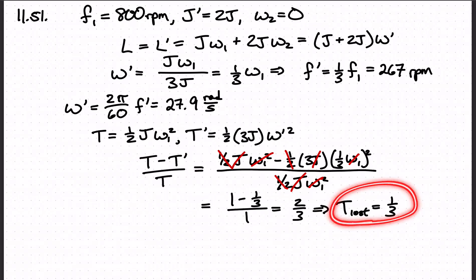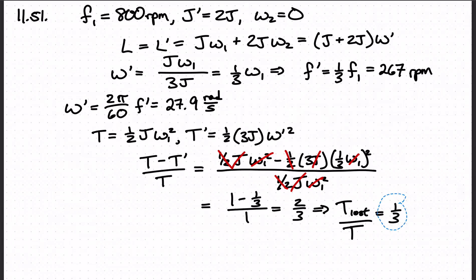Since two-thirds of the kinetic energy remains, that means one-third of it was lost. So the fraction of kinetic energy lost is one-third. We lost a third of our kinetic energy when we coupled the second disk to the first.